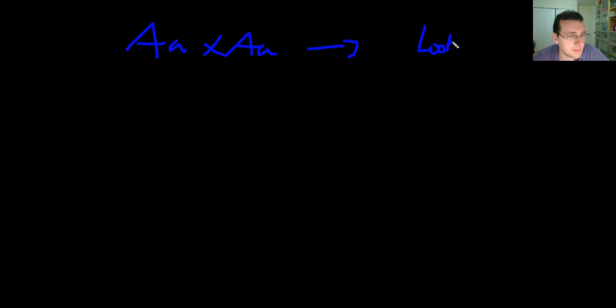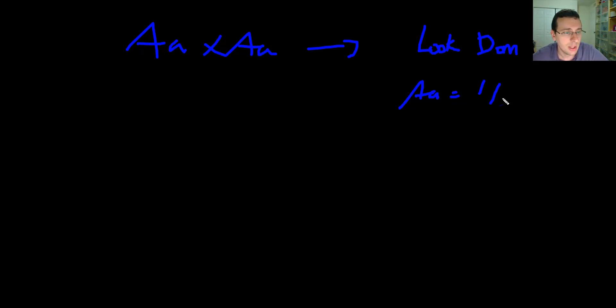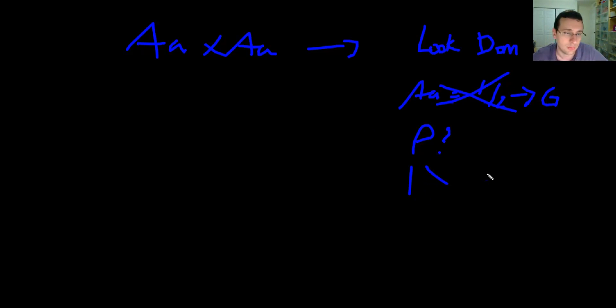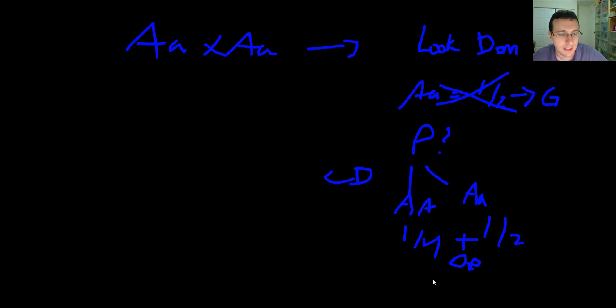Sometimes they'll give you phenotype problems. For example: you have two heterozygotes which are mixing — how many children will look like the parents? You can get tricked because if they say 'look like the parents,' you might answer one half, since this is an F1 cross where half the children match the parents' genotype. But they're asking about phenotype — the look. If this is complete dominance, big A, big A will also look the same as big A, little a. So you add another quarter for a total of three quarters chance.